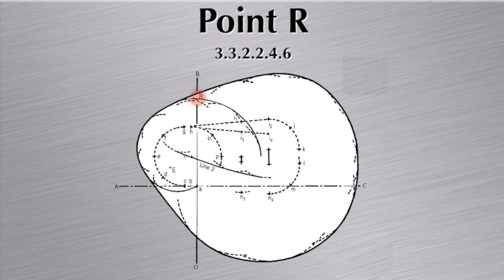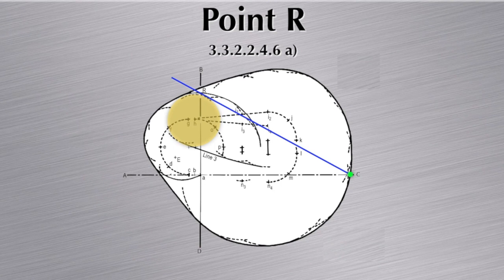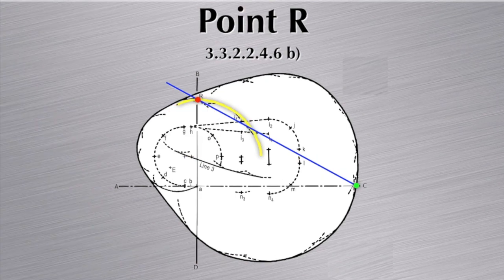The way Point R is constructed is described in sub-paragraph (a): draw the tangent to the area containing the end of the outbound turn, passing through the intersection point of the outline of the template with the C axis. That area is simply the wind effect circle WH applied at point H. Sub-paragraph (b) then says: locate Point R at the intersection of this tangent with the curve drawn in 3.3.2.2.4.3(b), which is the wind spiral around H, O, and P.